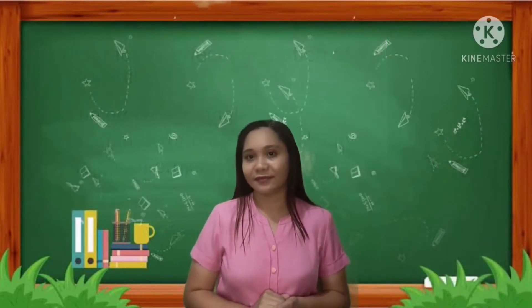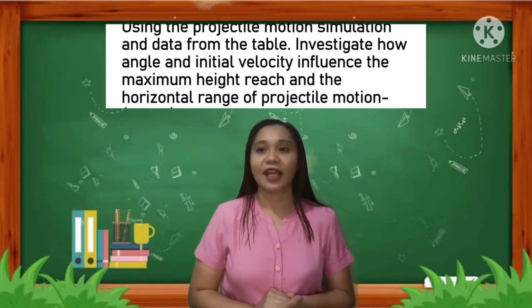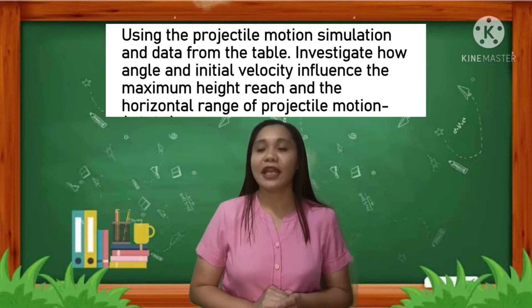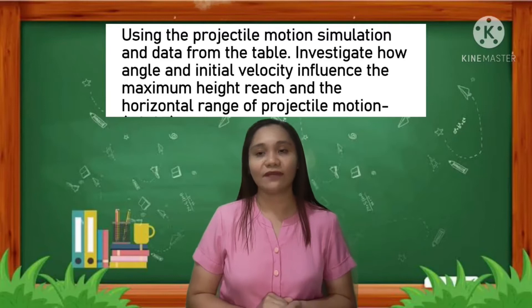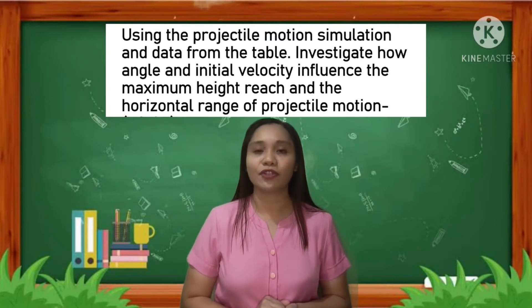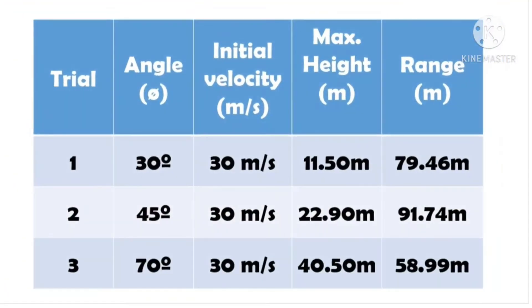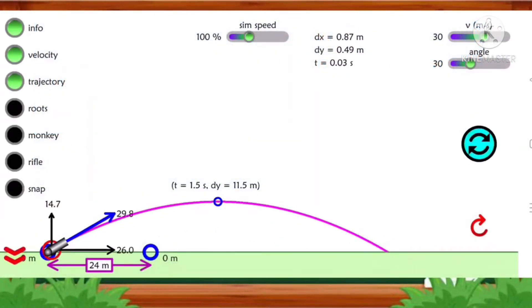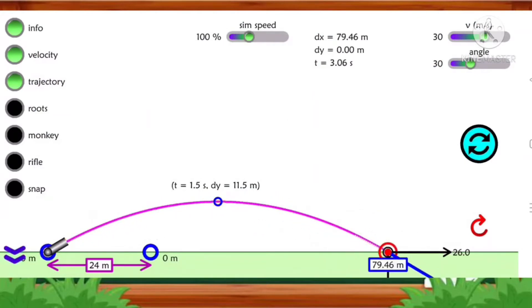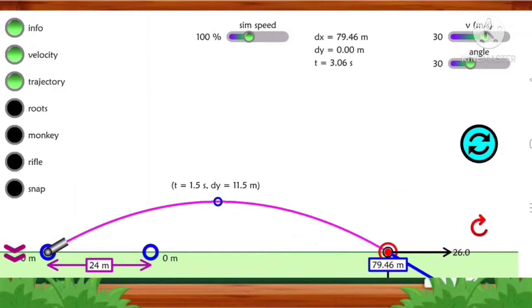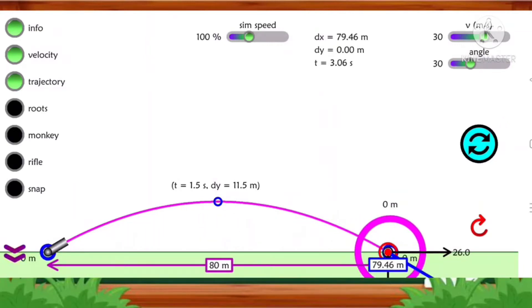Now, let us have an activity. Are you ready? Using the projectile motion simulation and data from the table, investigate how angle and initial velocity influence the maximum height and the horizontal range of projectile motion. Trial 1: Angle 30 degrees, initial velocity 30 m/s, maximum height 11.50 meters, horizontal range 79.46 meters.